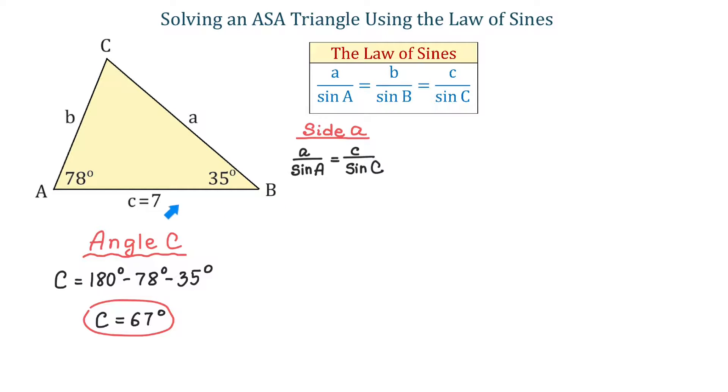Then, here we will replace angle A with 78 degrees, side C with 7, and angle C with 67 degrees. So, we will have A over sine of 78 degrees equals 7 over sine of 67 degrees. Then, we will use cross multiplying to write that A times sine of 67 degrees equals 7 times sine of 78 degrees. Then, we will divide both sides by sine of 67 degrees. Then, using a calculator, we will get that A is approximately 7.4 units.